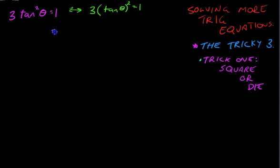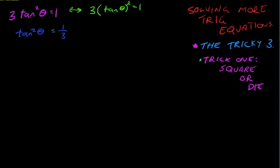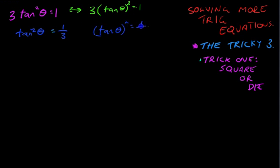Now the first step: it says three times tan squared theta equals one. We need to get rid of this three, so we move it to the other side — it's times three, so we divide. Tan squared theta equals one divided by three. If we were writing it the other way, it would look like tan theta all squared equals one third. Again, everything on this side is just for clarity — this is what your working should look like.